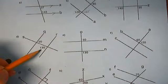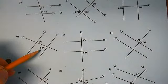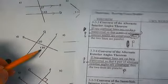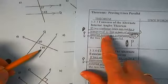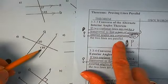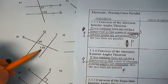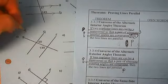What do we know about alternate interior angles? If the alternate interior angles are congruent, then the lines are parallel, so these are not parallel.